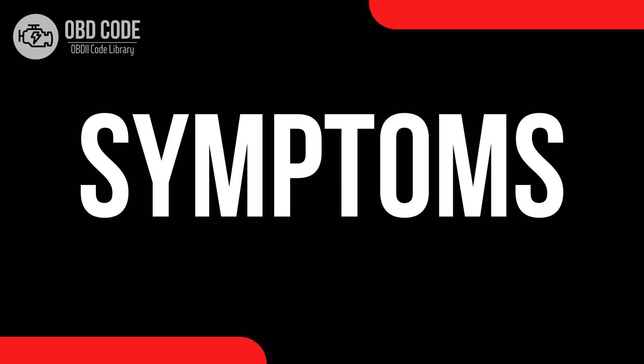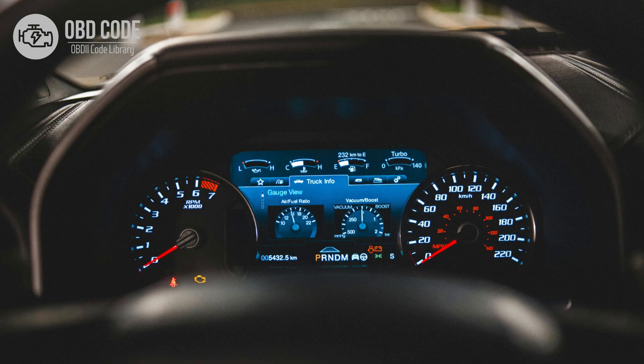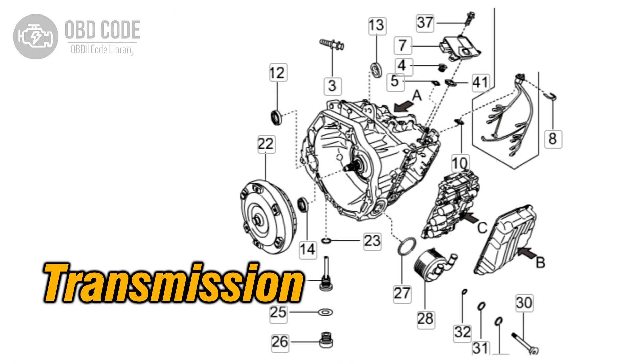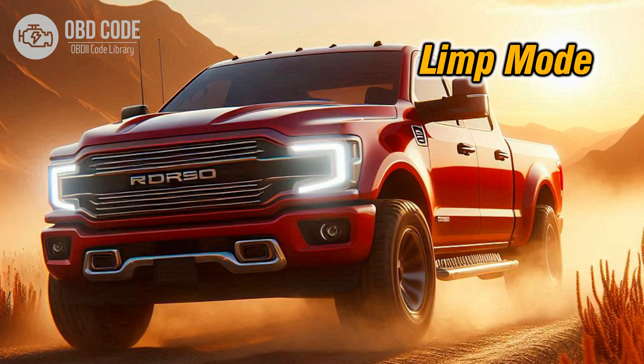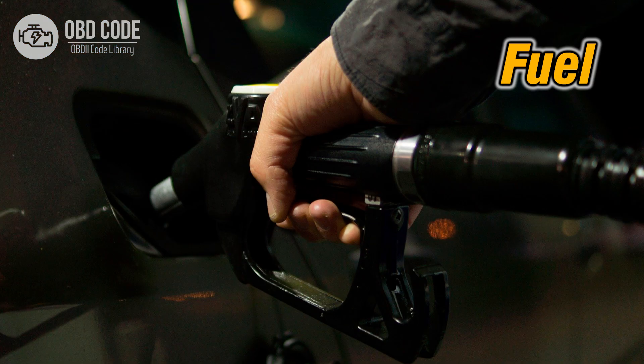Code P0770 symptoms: 1. Check engine light illuminated on the dashboard. 2. Transmission shifting issues, such as harsh or delayed shifting, or failure to shift at all. 3. Vehicle may go into limp mode to prevent further damage. 4. Decreased fuel efficiency due to improper transmission shifting.